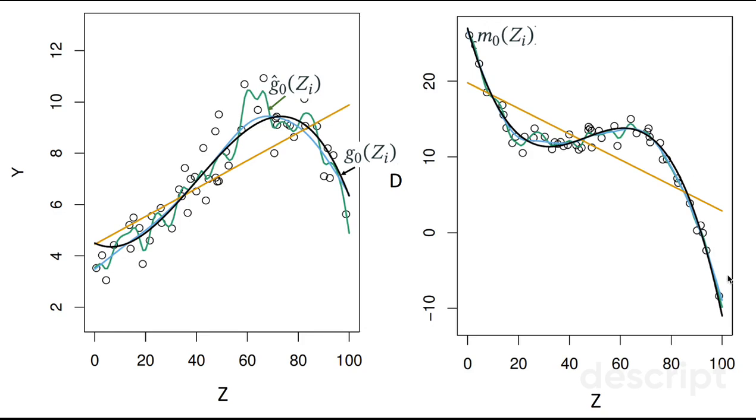And if we plot this data generating process, which is the black line, for example, it looks like this, what we will be trying to do with our machine learning algorithm is to approximate this data generating process. And, for example, we approximate it with this green line for y, and with this green line for d.